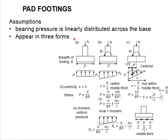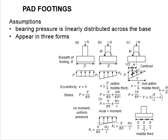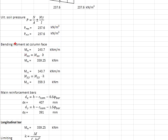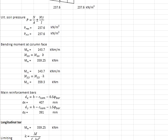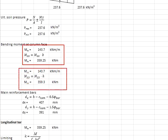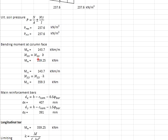Since there is no moment acting on the pad footing, you expect a uniform bearing pressure acting on the pad footing. Next, you need to determine the moment acting at the column face. Since the section is a square section, you do not need to design for both X and Y axis directions — the moment and reinforcement will be identical.